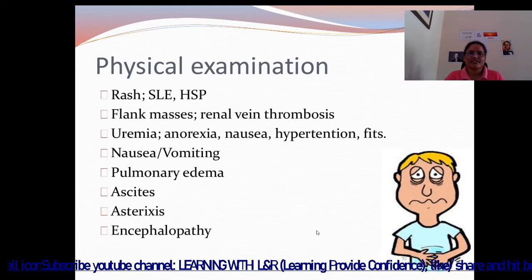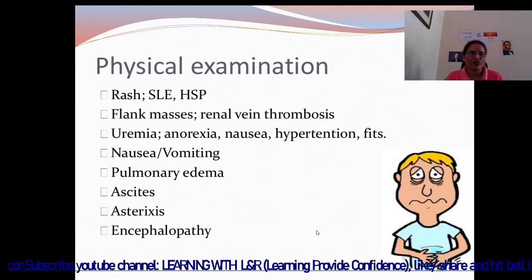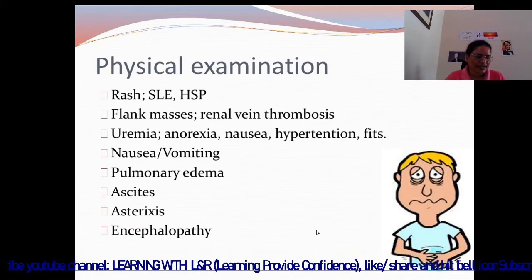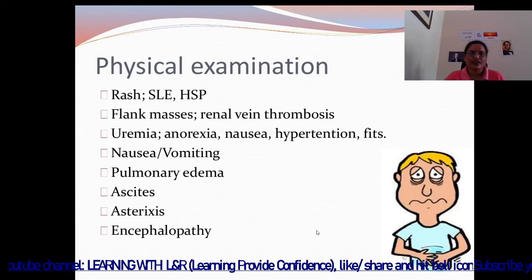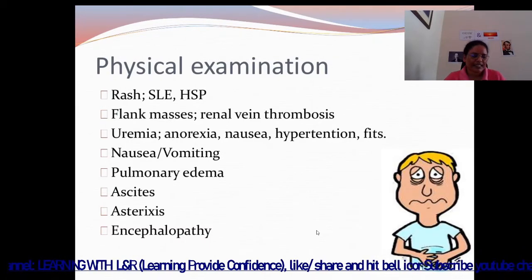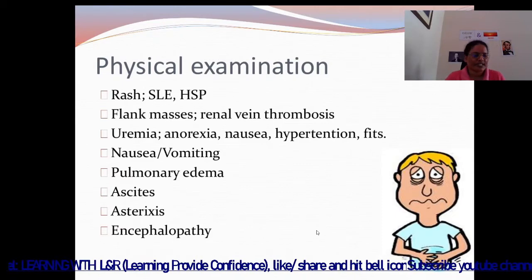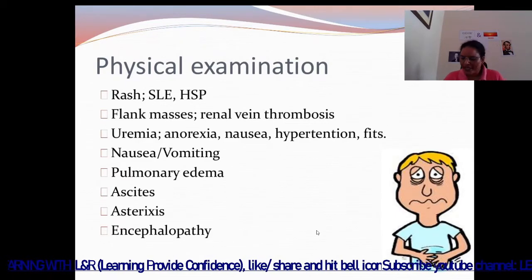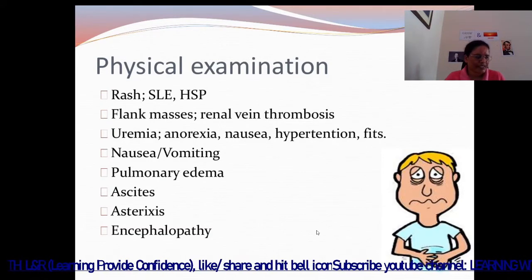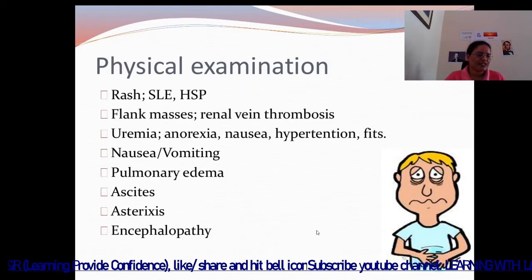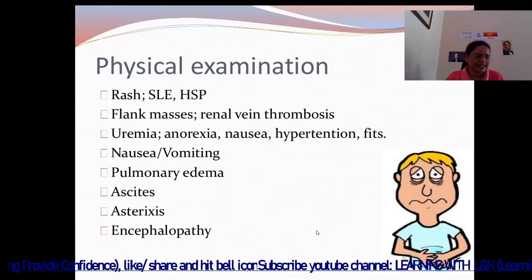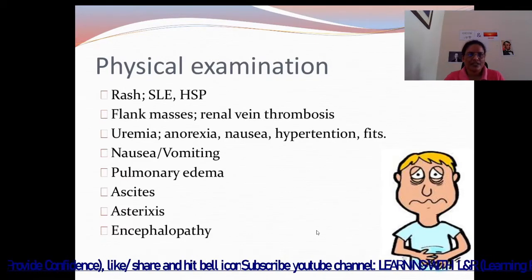In physical examination, we look for rashes — SLE, systemic lupus erythematosus, which is an autoimmune disease where the immune system mistakenly attacks normal cells of the body. HSP — Henoch-Schönlein purpura — involves inflammation of the blood vessels of the skin, joints, bowels, and kidneys. Then flank masses and renal vein thrombosis.